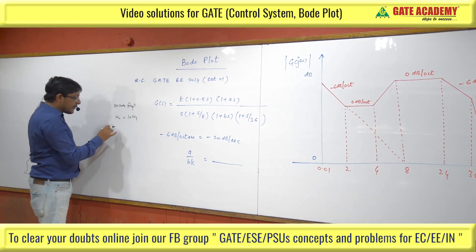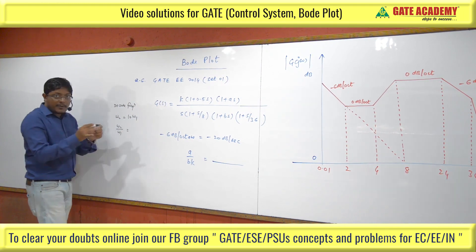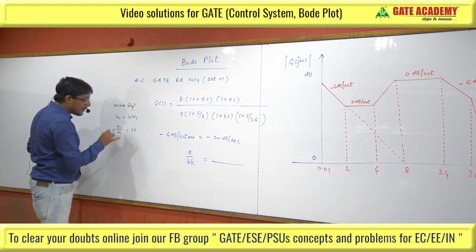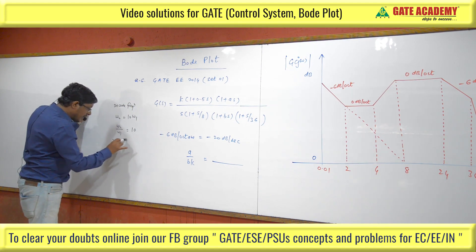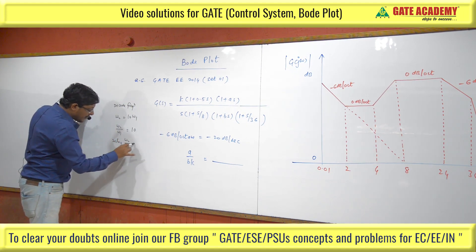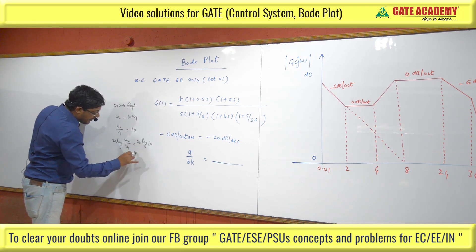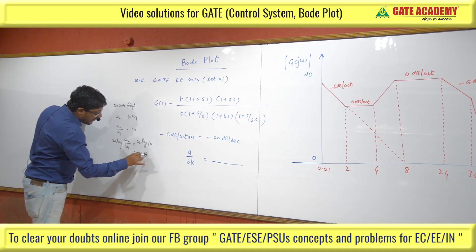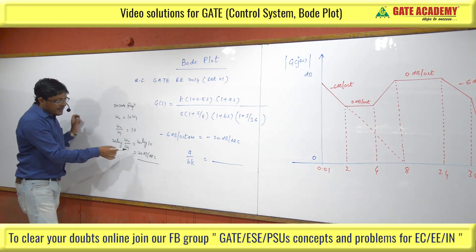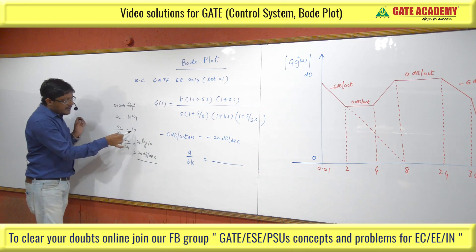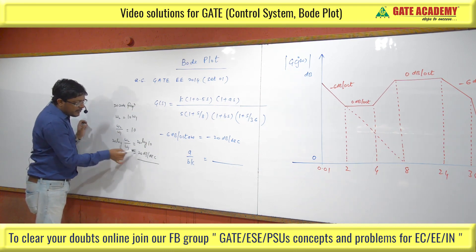If I take 20 log of (omega 2 / omega 1), that is 20 log(10), which equals 20. So it will be 20 dB per decade. Whenever frequency increases 10 times, the slope is 20 dB per decade. If it is 1 by 10, then it will be minus 20 dB per decade. This is the decade frequency concept.